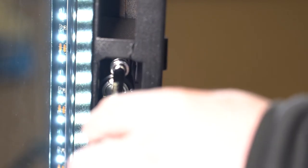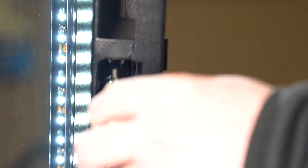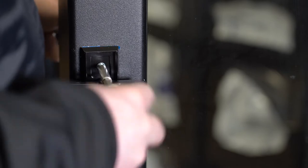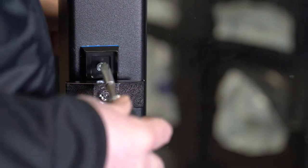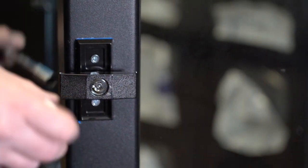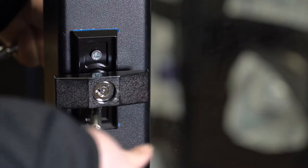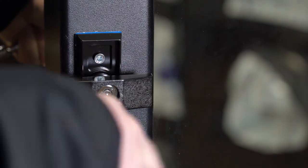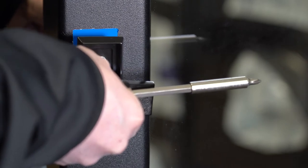Each screw has a corresponding nut on the back that will need to be removed at the same time. After removing the screws and nuts, you can take off the T-handle.